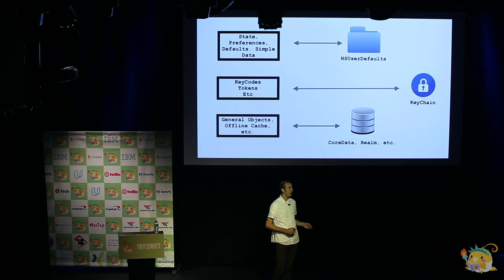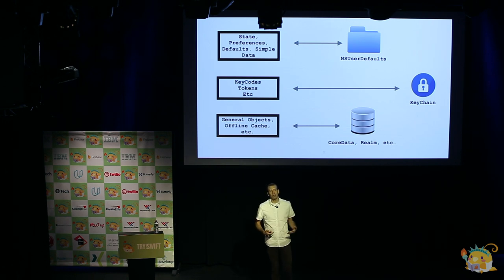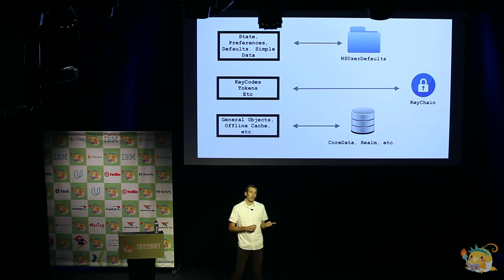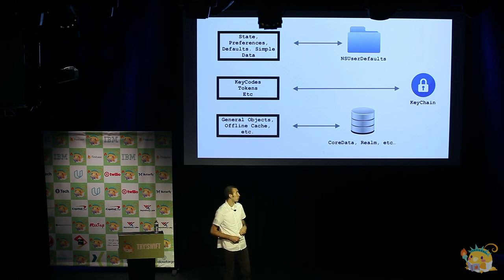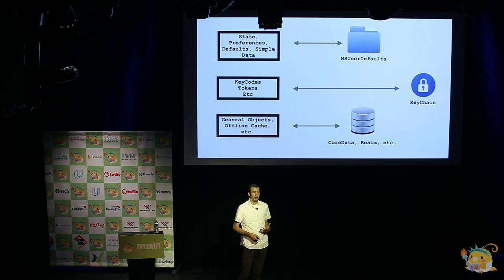For general objects we have Core Data, we have Realm, we have a lot of really great things. And when we're storing that data, as we mentioned, we have a lot of RAM to work with. So when we're accessing the database, we can go to a different thread, model objects, and it's not going to cost a lot to the end user.